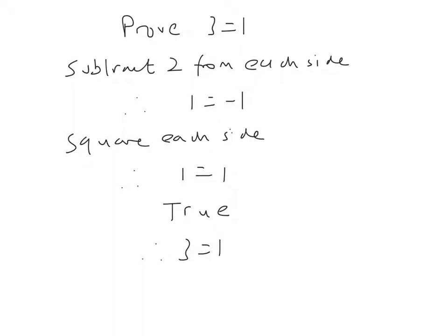Now, it may be surprising to know that 3 doesn't equal 1. This is clearly rubbish. This is not how you prove things. If you're asked to prove something, you don't just start with the thing you're trying to prove. You don't just start with this and work on it, end up with true and therefore say the original thing is true. This is not how you prove things.